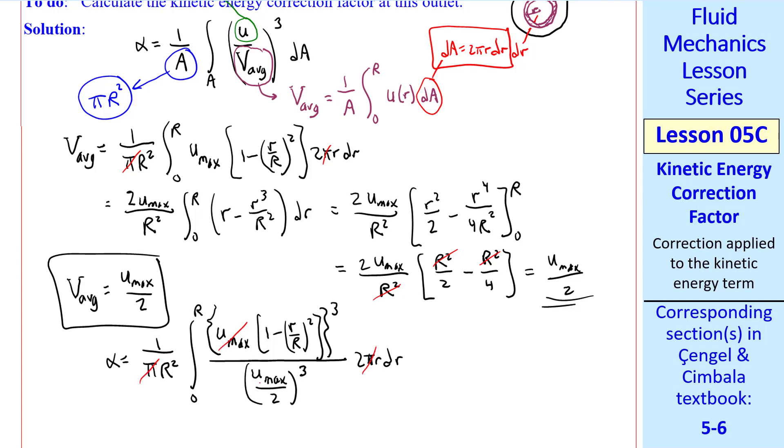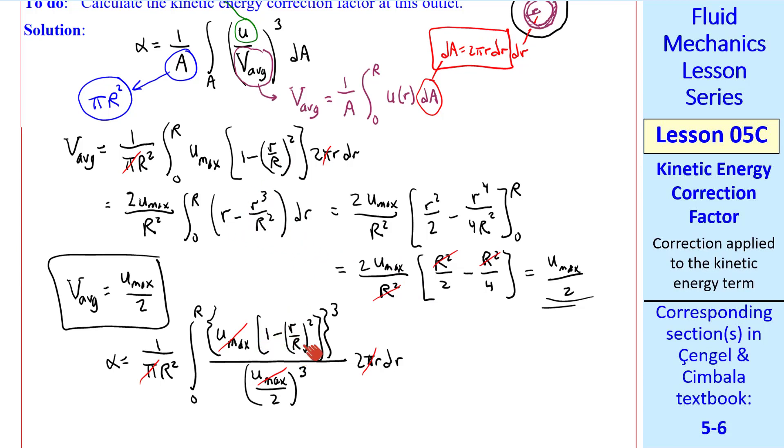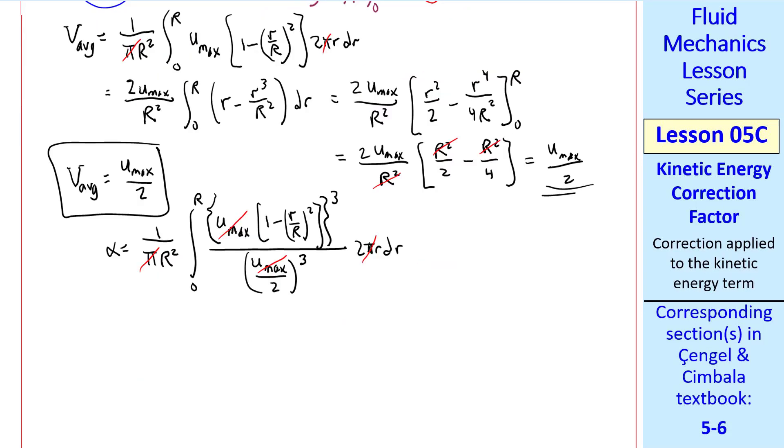Again, the π's cancel. u_max³ cancels with this u_max³. We do a similar analysis to what we did here, except it's more complicated, because you have to take this term cubed, and you get a bunch of terms that you have to integrate. I'll let you do that on your own.